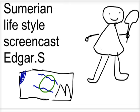Sumerians developed city-states near two rivers, Euphrates and Tigris.